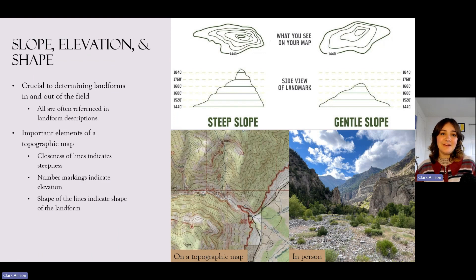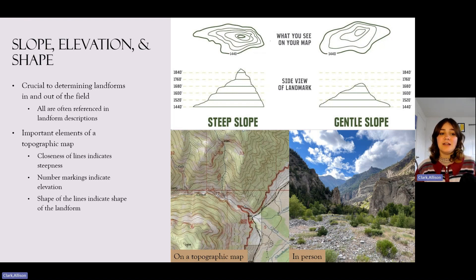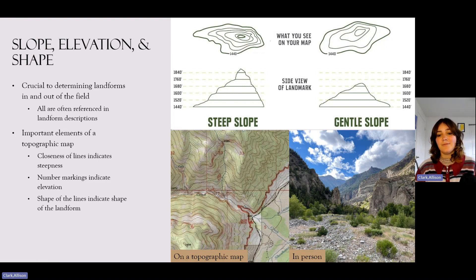Slope, elevation, and shape often work together in landforms and are all referenced in landform descriptions. Each is an important element of a topographic map — the closeness of lines indicates steepness, the number of markings indicates elevation, and the shape of those lines indicates the shape of the landform. You can see how the landform looks in person versus on a topographic map and how they align with slope, elevation, and shape.